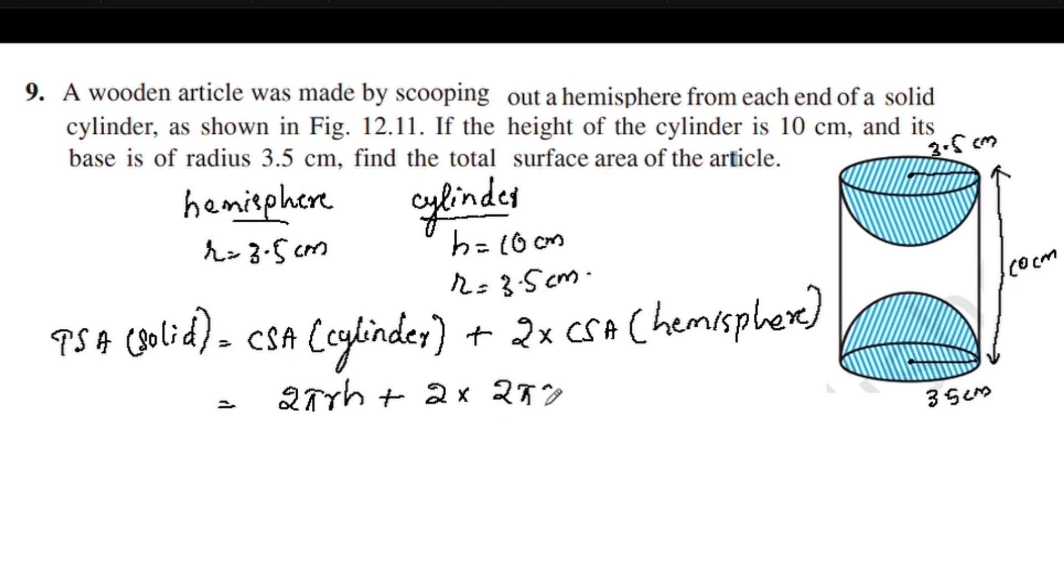2πr... this is 2πr(h + 2r). R is 3.5, height is 10, plus 2r is 3.5.